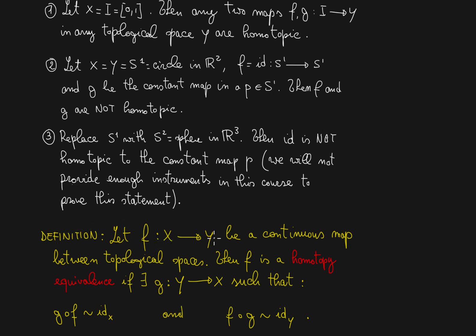Consider this definition now. Let f, a map from x to y, be a continuous map between topological spaces. Then we say that f is a homotopy equivalence if there exists a g going backwards, going from y to x, such that, as opposed to homeomorphisms which required both the compositions g composed with f and f composed with g being the identity, in this case we just require these two compositions to be homotopic to the identity. One identity on x and the other identity on y.